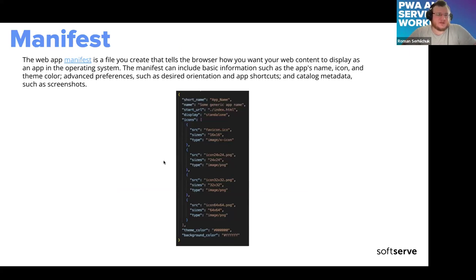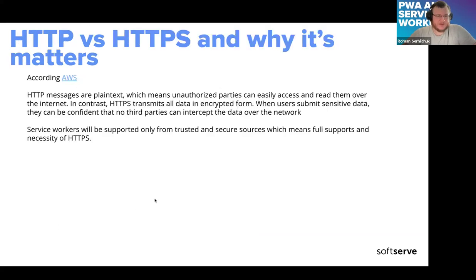The manifest is more like a digital configuration file for PWA. By using the manifest you can specify what icon to use when you install your PWA on your home screen, what display mode, start URL, background color, and so on.